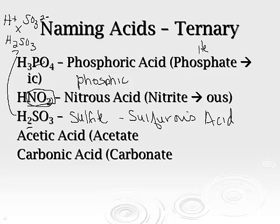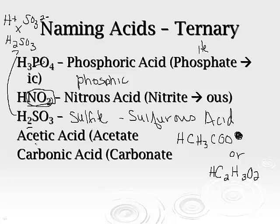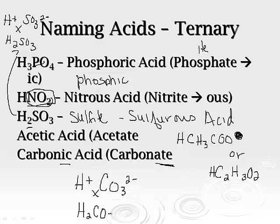Now we're going to go the opposite direction. For acetate, the formula is CH3COO- with a 1- charge. Since it's a 1- charge, I only need one hydrogen to pair up with it. The formula for acetic acid is HCH3COO, or the other form where we combine it: C2H3O2. Carbonic acid comes from the carbonate ion — we go from -ic to -ate. Carbonate is CO3 2-. Pair it with hydrogen (1+) and it becomes H2CO3, which is our formula for carbonic acid.